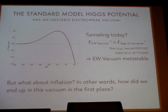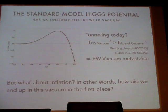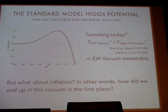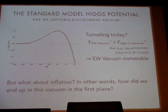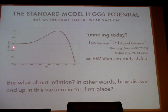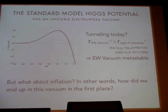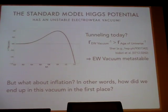So I'm going to start with this setup — this instability in the Higgs potential — and ask the question: if we do have an unstable potential where our electroweak vacuum is not the global minimum, how did we get here? What does it look like to try to start in this vacuum and then have a period of inflation?